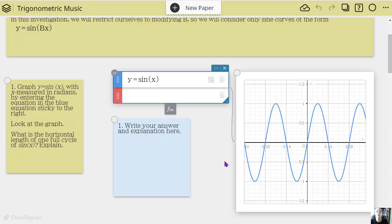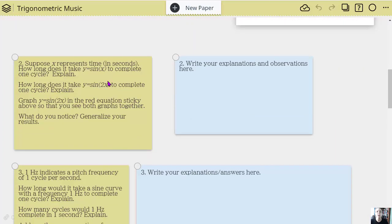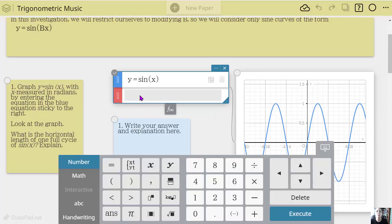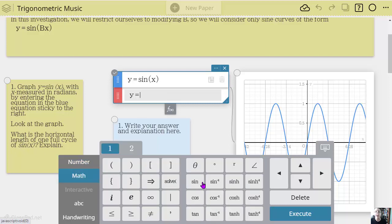The first question is what is the horizontal length of one full cycle. They're going to explore that, and then as they move down, it talks about what happens if you transform or translate that function. Let's look at this one and compare them, because this is what happens when you change the pitch of music.